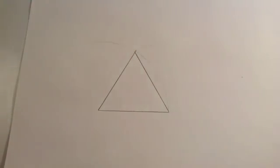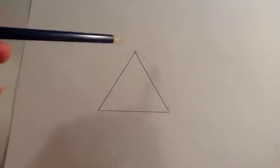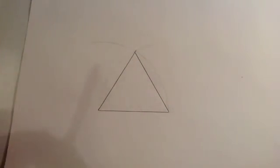It's a bit hard whenever you're filming and doing it right-handed. But there you go. That is how you construct an equilateral triangle. And each one of these angles would be 60 degrees.